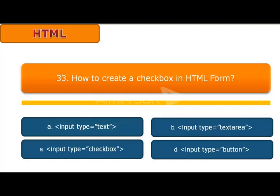Question number 33: How to create a checkbox in HTML form? A input type equals text, B input type equals text area, C input type equals checkbox, D input type equals button. Answer is C, input type equals checkbox.